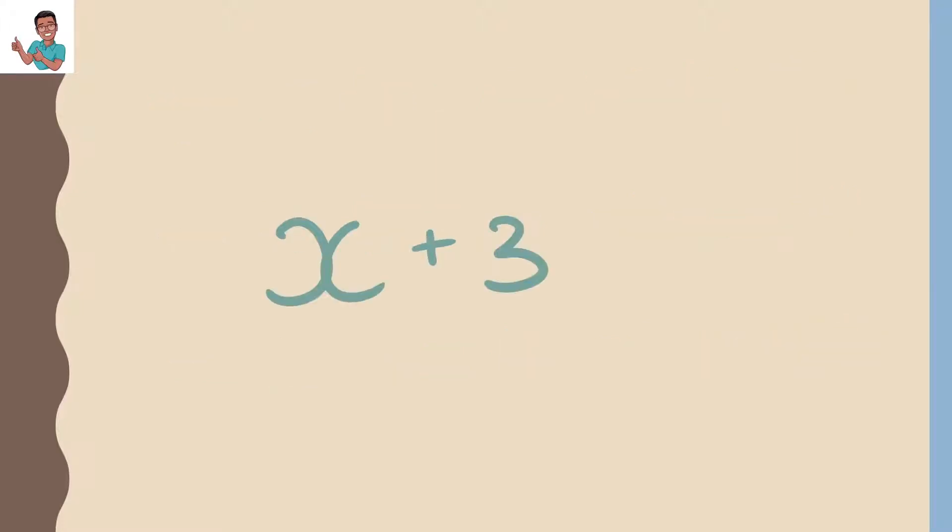Here we have x plus 3. This is an expression, but in order to make it an equation, we have to have a balancing scale. So we can have equals, less than, greater than, less than or equal to, greater than or equal to. But we're going to be looking at equals.